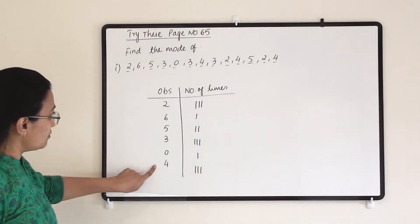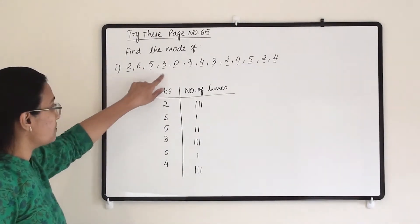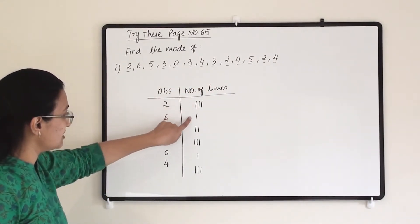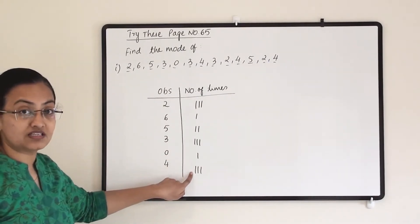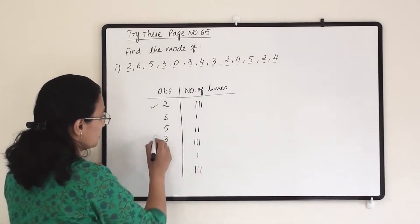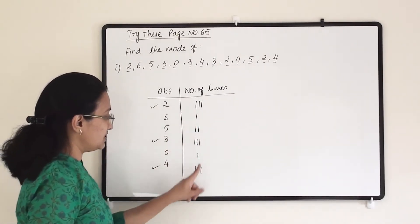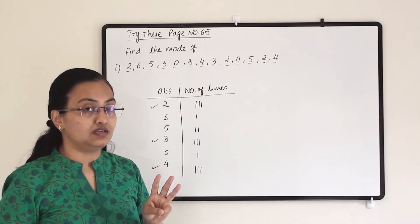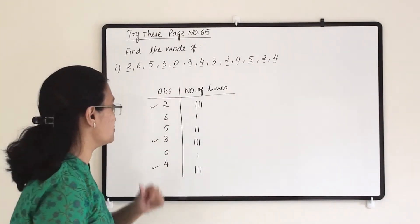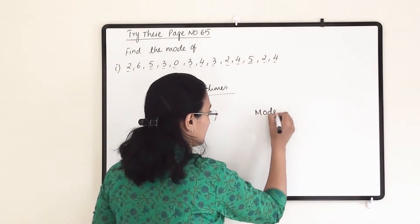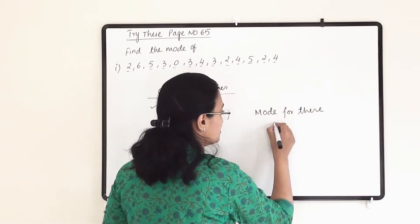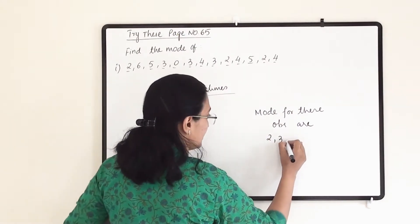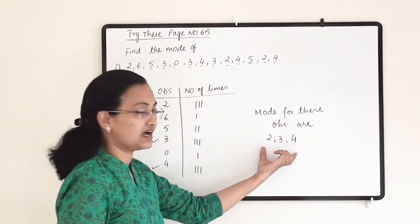You can note down all the observations in the table, or you can write them as they appear in the line — either way works. Here all the observations are listed, and the table shows which numbers have come multiple times. You can see that two, three, and four are each coming three times, so the maximum frequency is three times. That means all three numbers are the mode for this observation. So mode for these observations is 2, 3, and 4.